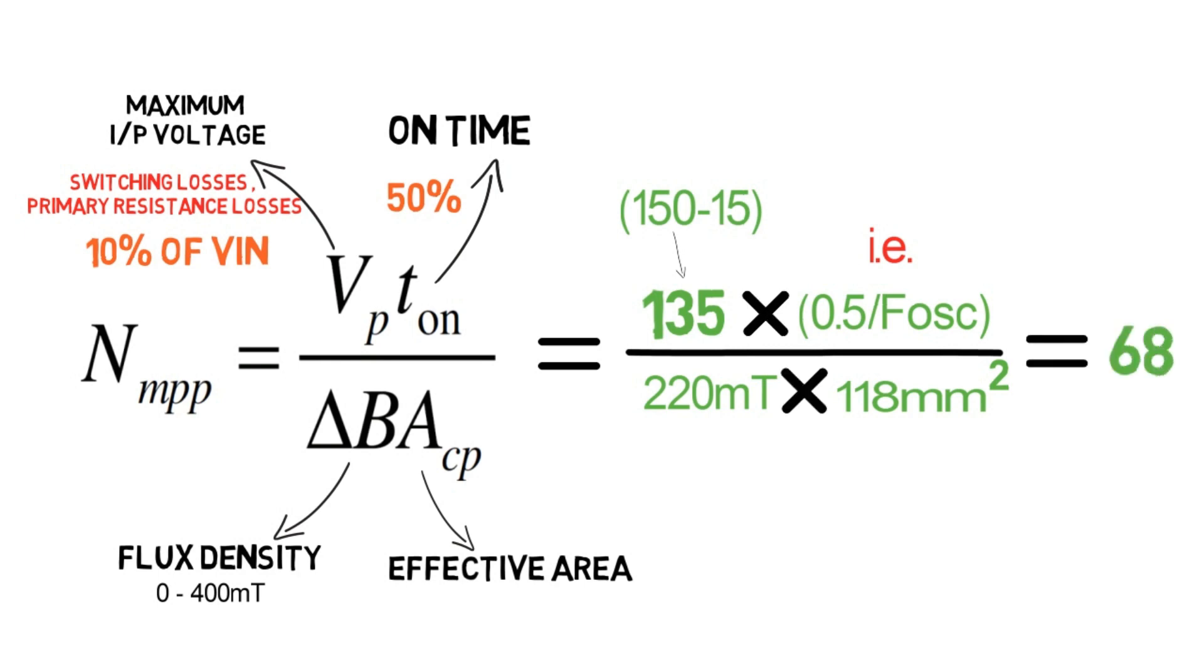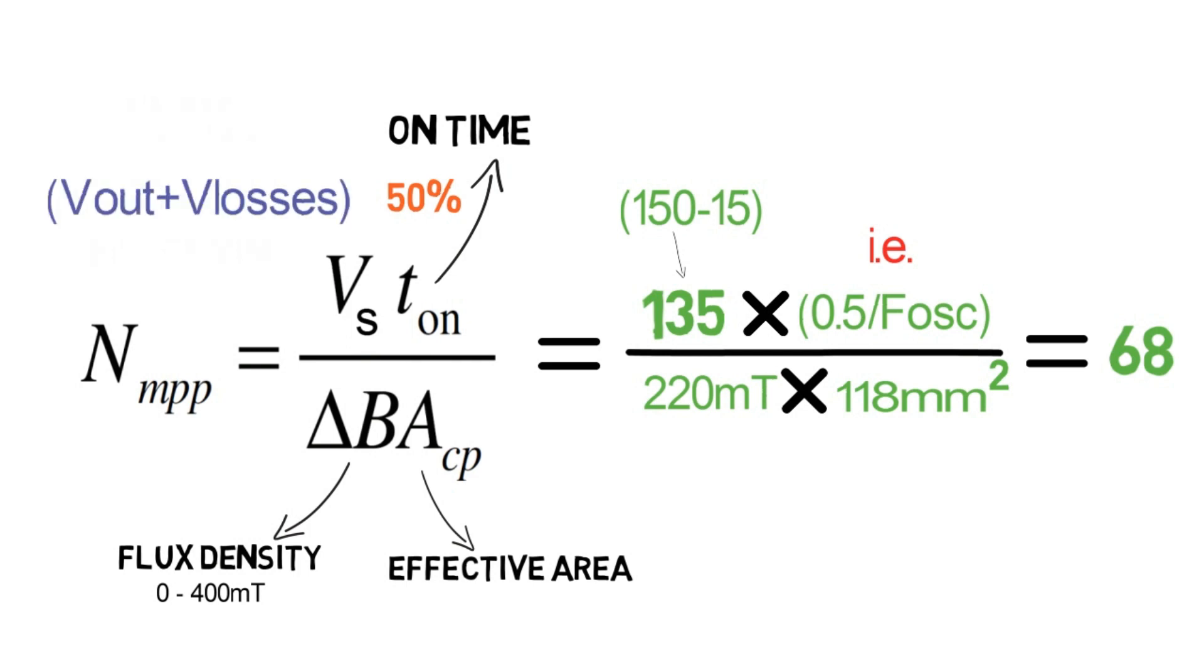We can find out the secondary number of turns. For the secondary turns NS equals to VS times T_on divided by AE times delta B. We need to calculate the secondary voltage VS which is equal to V_out plus V_losses. These losses will be of rectifier diodes, choke wiring, and transformer resistance. Let's consider these as 5 volts. Hence NS will be 30.